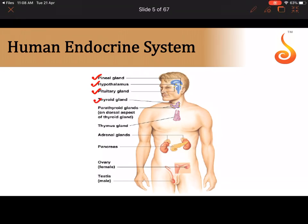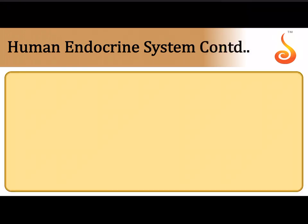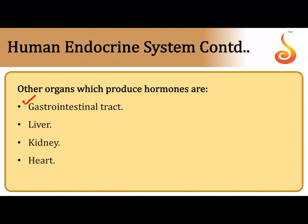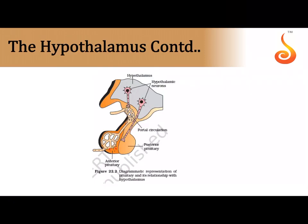Other major endocrine glands include the parathyroid, thymus, adrenal gland above the kidney, pancreas, and the gonads — the ovary and testis — which also function as endocrine organs. Many other organs perform endocrine activities: the intestine has endocrine cells, the liver secretes bioactive substances, the kidney has hormone-secreting cells, and the heart muscles also secrete certain hormones.